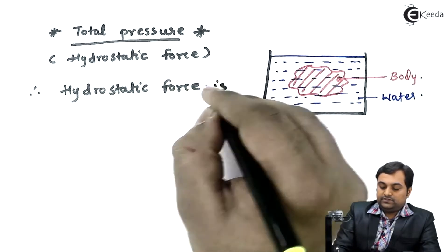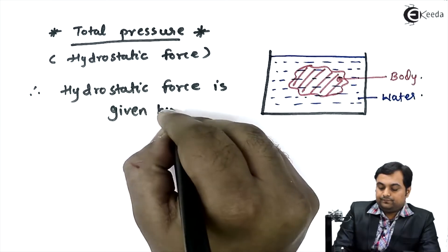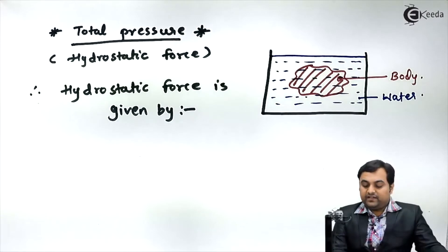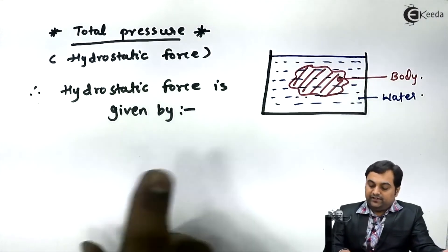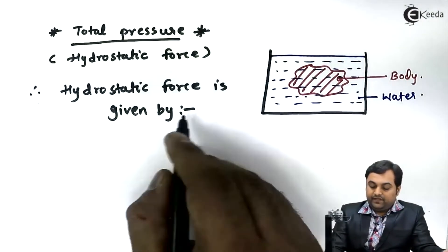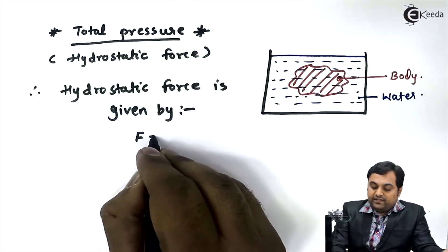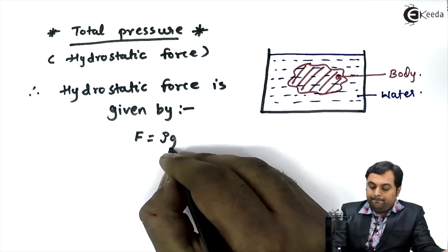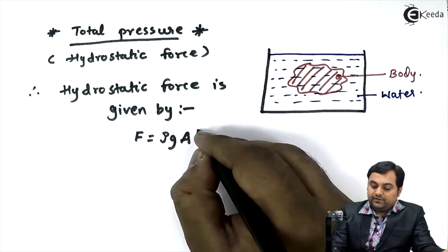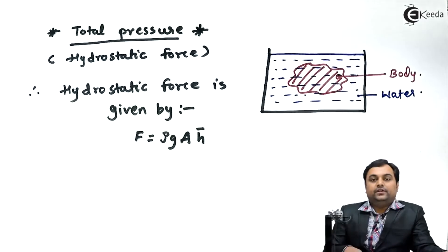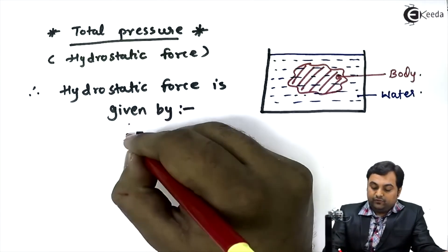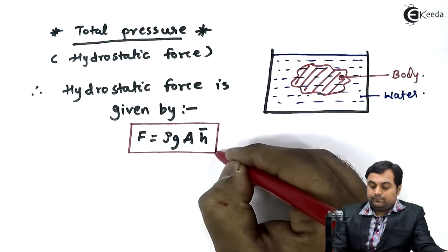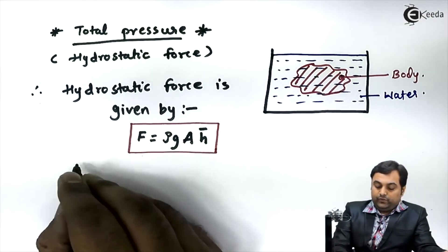is given by F equals ρ times g times A times H̄. Here I have the formula for hydrostatic force. Now I'll write down where...